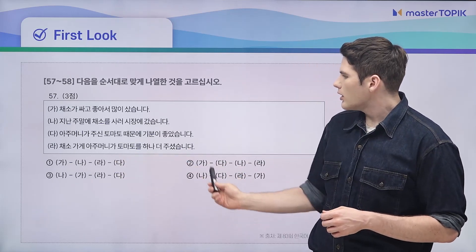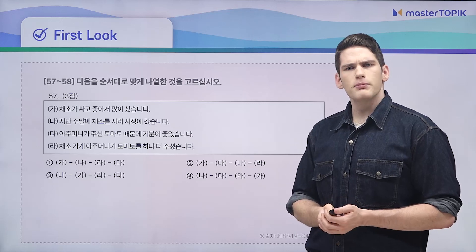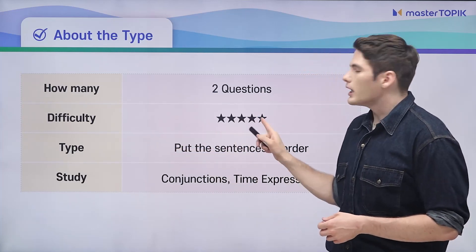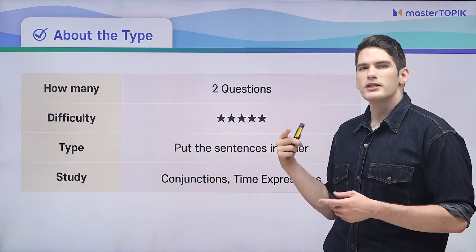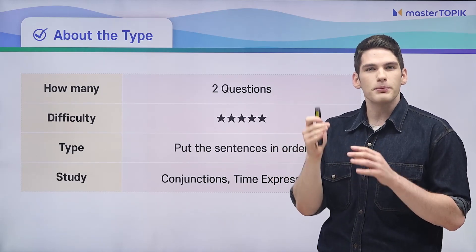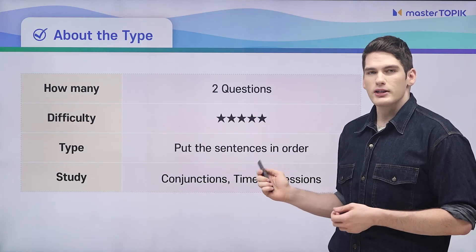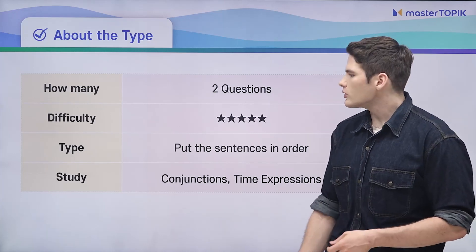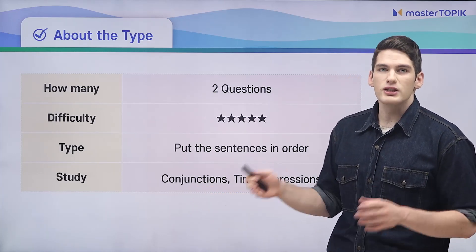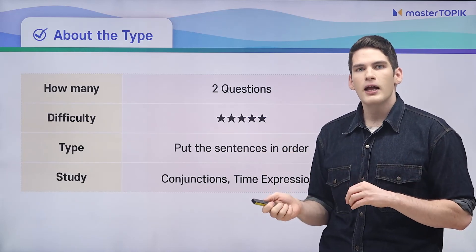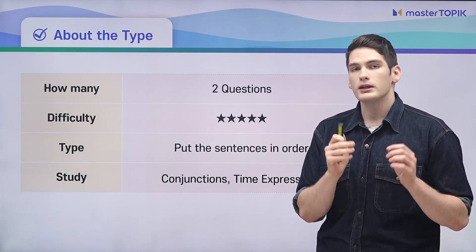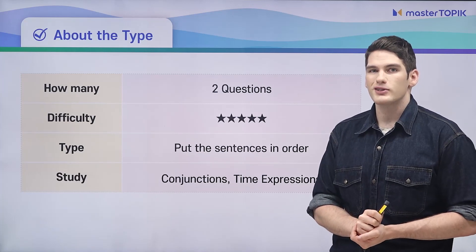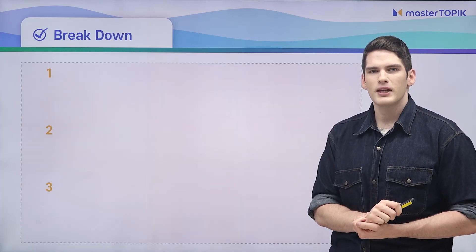We have one, two, three, four answer options. So we can see it's going to have something to do with putting sentences in order. We're going to have two of these questions, and the difficulty is going up really high now. You have to use your skills to put these sentences in order — it's a little bit more difficult. So what are we going to have to study? We're going to be studying conjunctions, because conjunctions are what link sentences together. And also time expressions — we're going to be learning time flow again.